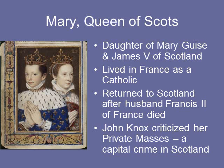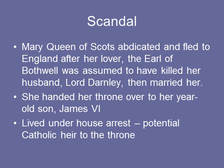Mary Queen of Scots was the daughter of Mary of Guise and James V of Scotland. She lived in France as a Catholic and returned to Scotland after her husband Francis II of France died. John Knox criticized her private masses — a capital crime in Scotland. There was a scandal: Mary Queen of Scots abdicated her throne and fled to England after her lover, the Earl of Bothwell, was assumed to have killed her husband Lord Darnley — and then married her. She handed her throne over to her young son, James VI, and lived under house arrest in England as a potential Catholic heir to the throne.